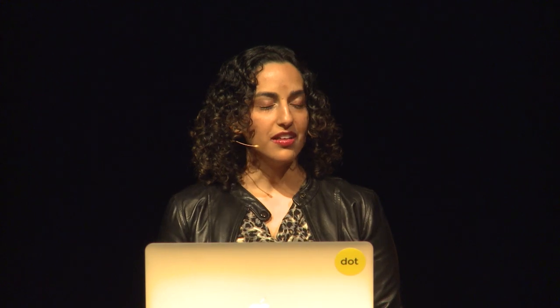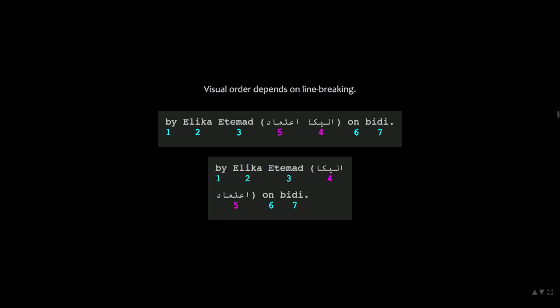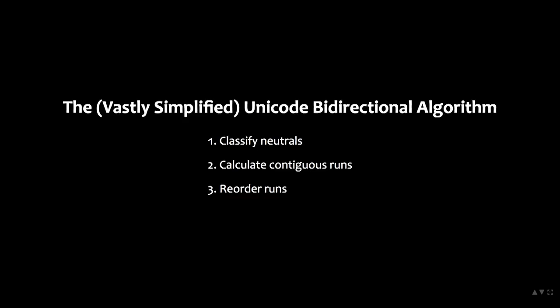The algorithm's job is to take your text and order it correctly. The text is stored in logical order — the order you read it in — not in a visual order. We do that because the order is also dependent on where you break. If you notice in the example, the first name comes first, which is on the right side, but it has to be on the first line. So if you break between the first and last names, you need to make sure the first name stays on the first line and the last name goes on the second. The BiDi algorithm classifies neutrals, figures out contiguous runs of the same direction, and then reorders them by flipping the runs over.